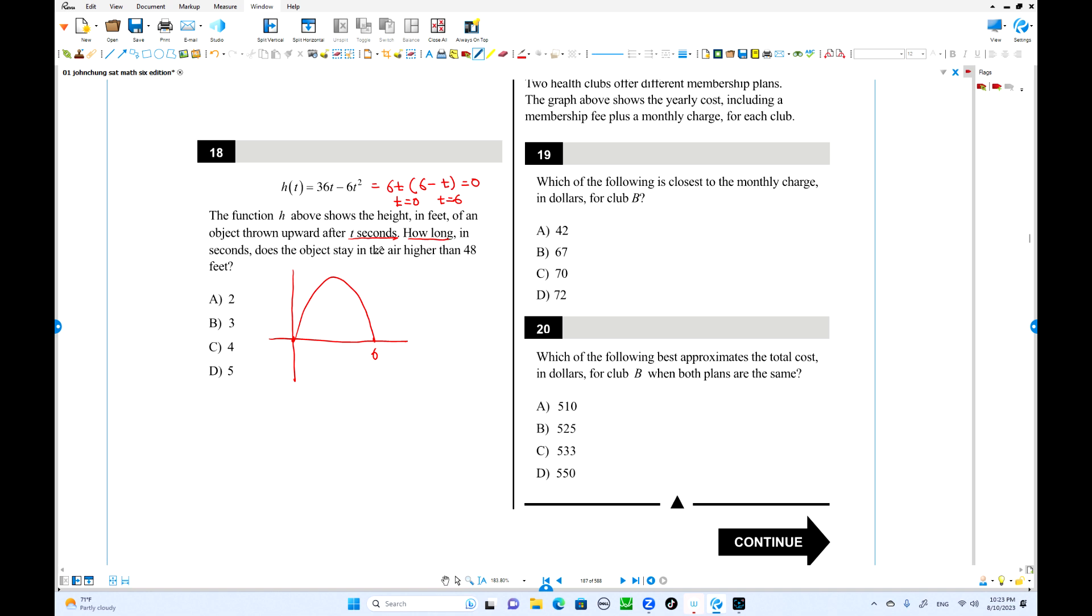But the question is over here. How long does the object stay in the air higher than 48? Maybe around 48. Higher than, so we have two intersections. So this intersection, this interval will be what? The object stays higher than 48. So we have to find these two intersections. Take this one: 30t minus 60 equals 48. Minus 48 equals 0. This is equal, so we move 48 to the left hand side, minus 48.